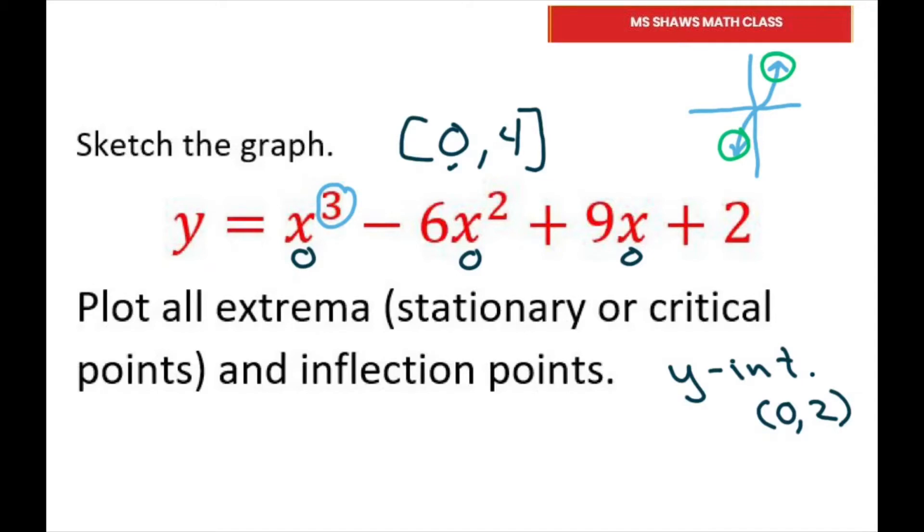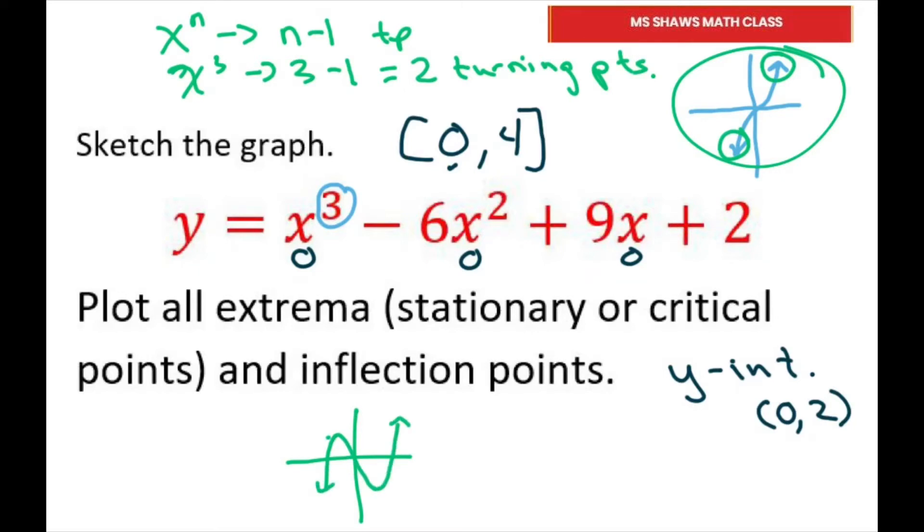Also, with the degree 3, it means we have at most n minus 1 turning points. So basically, that would be n minus 1 turning points. Since we have 3, that would mean 3 minus 1 equals 2. At most, it could be less, but 2 turning points. And that you probably learned from in pre-cal. So, it could look something like this. And that would be your 2 turning points. Or, it could look like we start here, go down, and go up. But that would be at most 2 turning points.